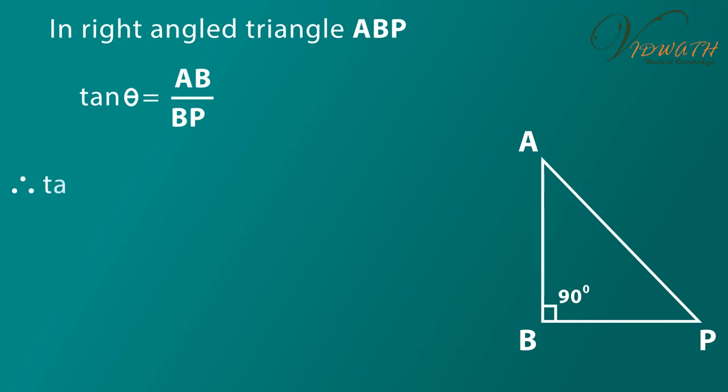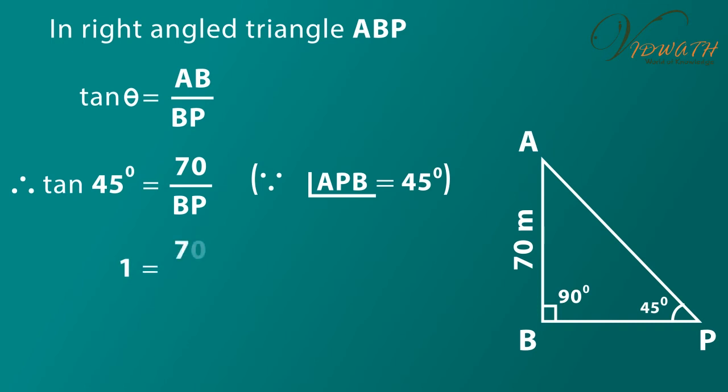Because angle APB is equal to 45 degree, 1 is equal to 70 by BP because tan 45 degree is equal to 1. By cross multiplication we get BP is equal to 70 meter. Therefore BP is equal to 70 meter.